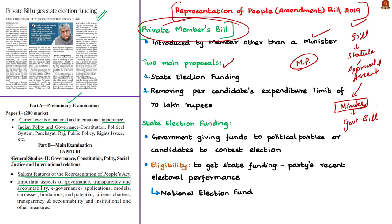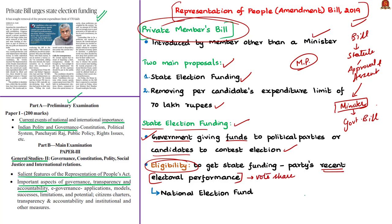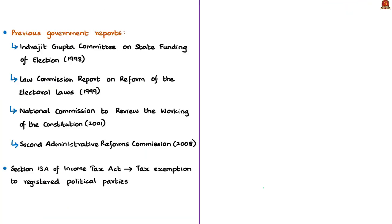This bill has two main proposals: one is state election funding, and the other is to remove the per-candidate expenditure limit of 70 lakh rupees. State election funding — also called public funding of elections — is a process of the government giving funds to political parties or candidates to contest elections. This bill proposes to allot funds according to each party's recent electoral performance — that is, their vote share in the recent election — by introducing a fund called the National Election Fund.